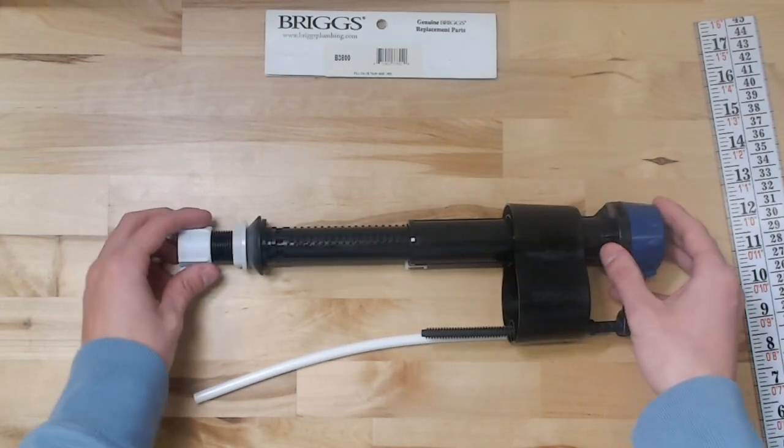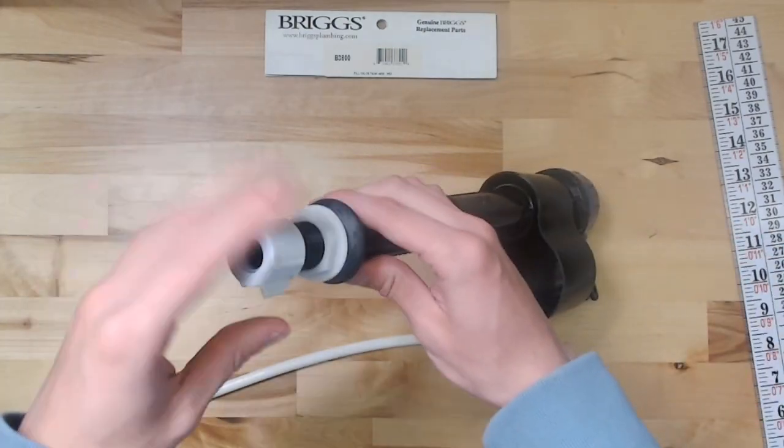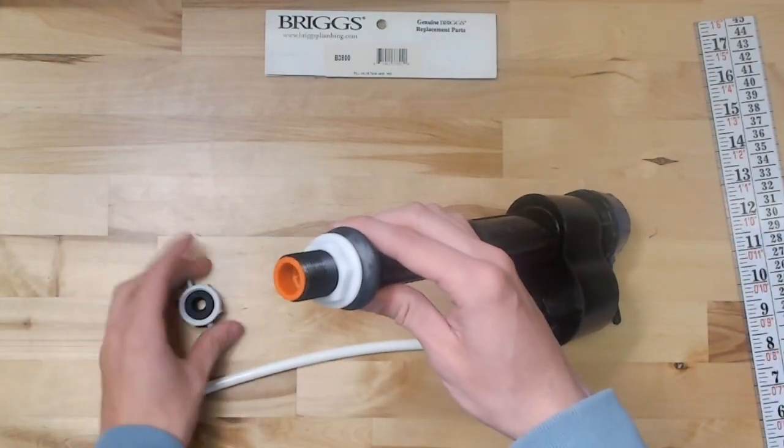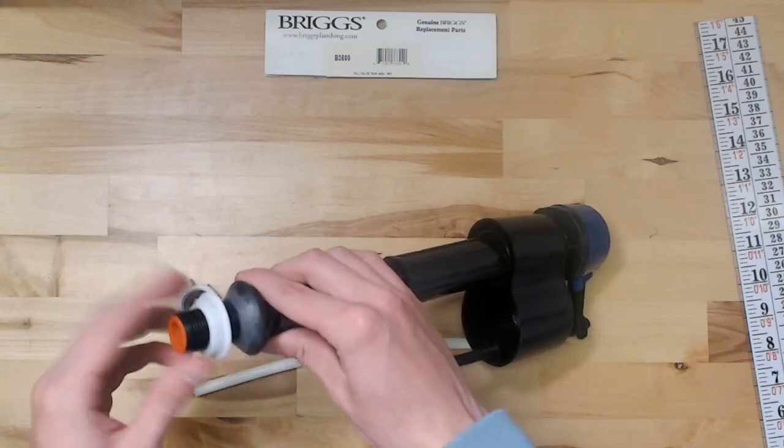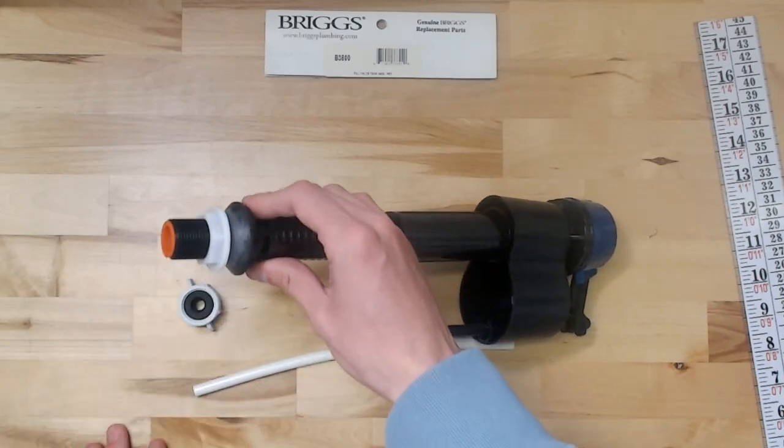This valve comes complete. It has the supply line nut and washers along with the nut and gasket to secure the valve to the tank.